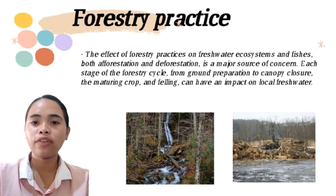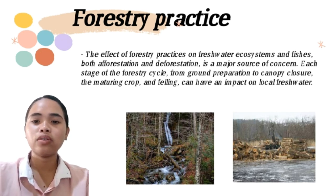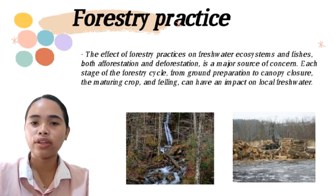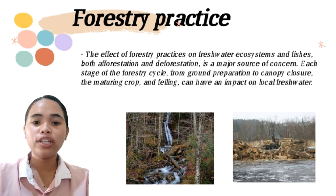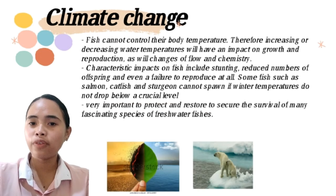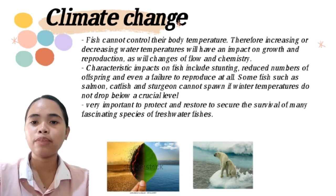Each stage of the forestry cycle — from ground preparation, canopy closure, the maturing crop, to the felling — can have an impact on local freshwater. Lastly, climate change: fish cannot control their body temperature, so increasing or decreasing water temperatures may have an impact on growth and reproduction, as well as changes in flow and water chemistry.